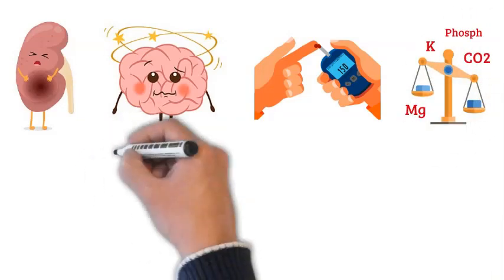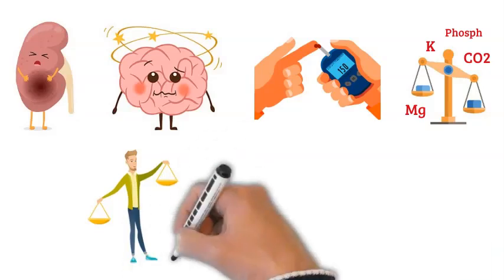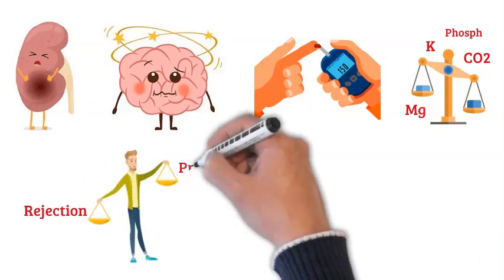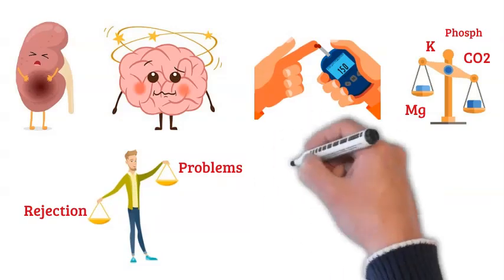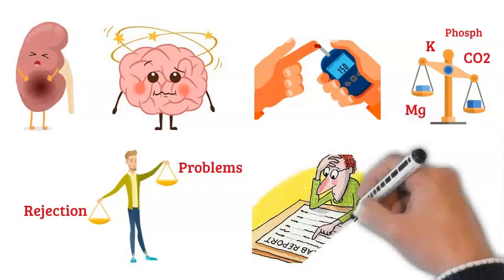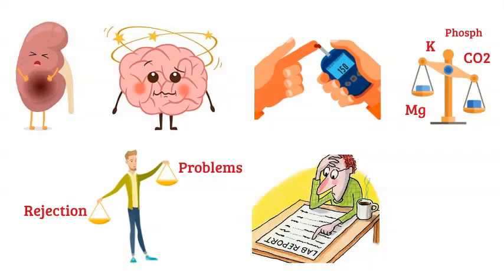As you can see, it's a balancing act to make sure that there is enough tacrolimus to prevent rejection, but not so much to cause problems. For this reason, we must monitor the level of tacrolimus in the bloodstream regularly and adjust each patient's dose accordingly.